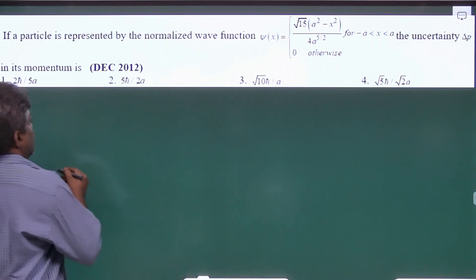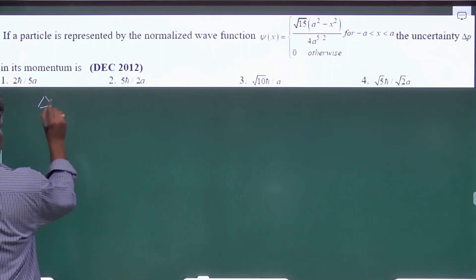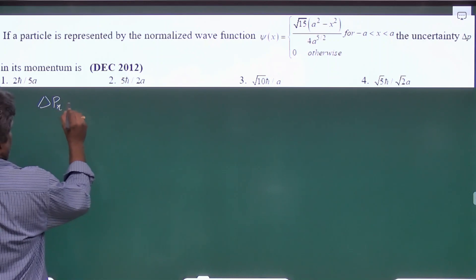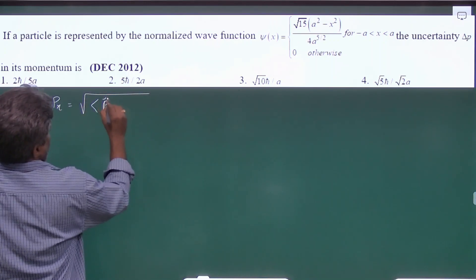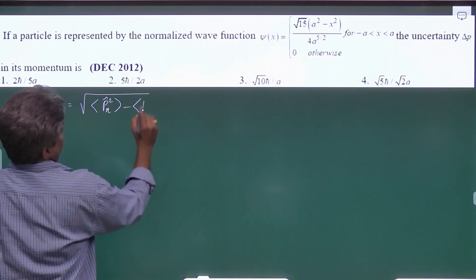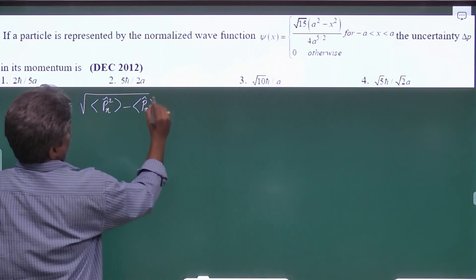So if you want to find delta p, delta px we can write it as under root px square mean minus px mean whole square.